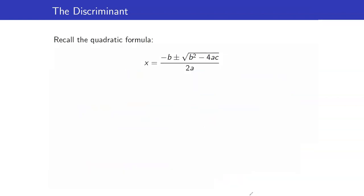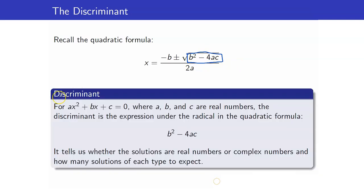Next, we are going to talk about the discriminant. Let us recall the quadratic formula. Let's take a look at the expression inside the square root sign: b squared minus 4ac. It turns out that just by knowing this value, it will help us determine the nature of our roots. The discriminant of a quadratic equation ax squared plus bx plus c equals 0 is the expression b squared minus 4ac. This discriminant tells us whether the solutions are real numbers or complex numbers, and how many solutions of each type, without solving for x.